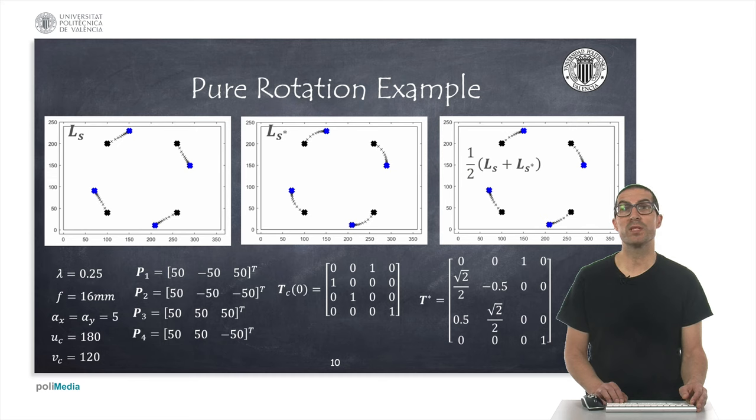Above, we observe three different simulations corresponding to the case where we use the depth of the observed points with the interaction matrix L_s on the left figure. In the middle, the depth of the reference points is used with L_s star. In the right image, we use the combination of both.